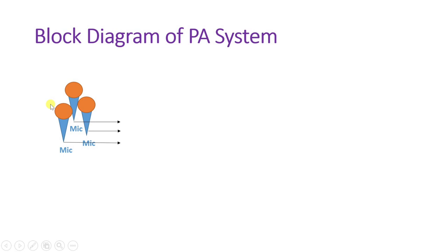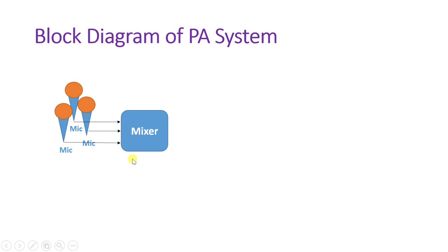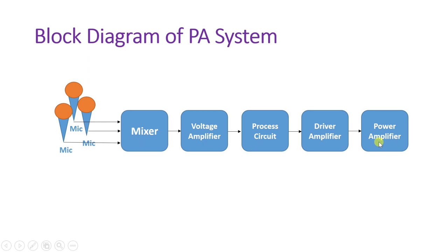In a PA system, first there is a microphone which translates sound signal into electrical signal. Multiple mics — multiple channels — are connected to a mixer, then to a voltage amplifier, then to a processing circuit, then to a driver amplifier, then to a power amplifier, and finally to the loudspeaker.